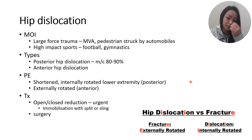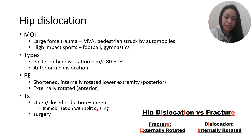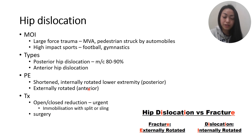For diagnosis, you can do an X-ray. For treatment, urgent immobilization — reduction — is needed. Immobilization with a splint or sling is urgent because the longer you leave the dislocation, the higher the risk for complications like avascular necrosis, which is the death of the bone due to insufficient blood supply. If the joint cannot be repositioned, or if there's damage to blood vessels, nerves, or ligaments, surgery may be an option.